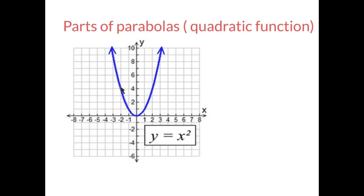A parabola is a u-shaped line. This u-shaped line can come in different forms — it can be facing up or it can be facing down. That does not matter. As long as it looks like a u, inverted or just facing up, it will be a parabola. But parabolas have different parts on them that we look into.